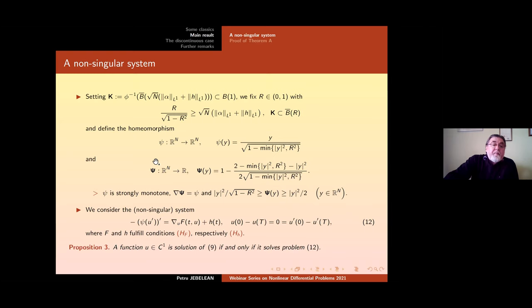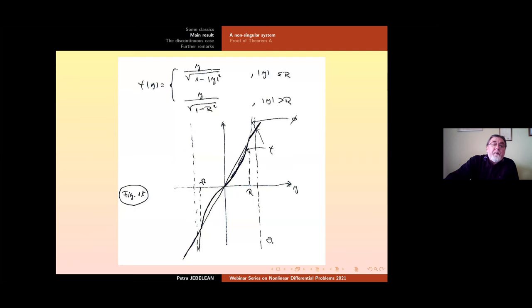I said already that Ψ is strongly monotone and its potential is capital Ψ. Also, it is important that the capital Ψ has this behavior. We can say it is bounded by two quadratic forms. In the case n=1 this means this is bounded by two parabolas. Okay, now with this Ψ we consider the non-singular system 12 here where by difference with system 9 we only have modified here instead of φ we have Ψ where of course F and H fulfill conditions HF and HH.